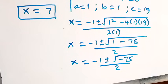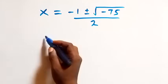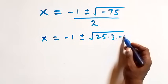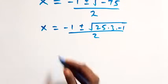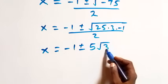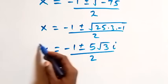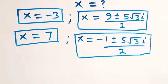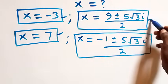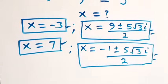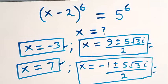Writing minus 75 as 25 times 3 times minus 1, we get x equals minus 1 plus or minus 5 times root 3 times i, over 2, giving two more complex solutions. In total, this problem has six solutions: two real solutions x equals minus 3 and x equals 7, plus two complex solutions from each case. Thank you for watching — don't forget to subscribe, turn on the notification bell, share, and give it a thumbs up. See you in the next class!